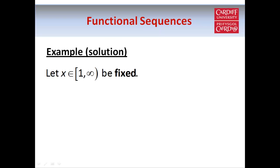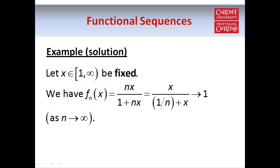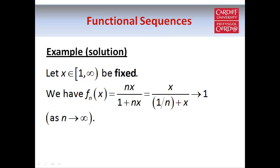To check for pointwise convergence, we consider a fixed value of x. If x is a fixed number between 1 and infinity, it's straightforward to show that fn(x) tends to 1 as n tends to infinity. So the sequence is pointwise convergent to the constant function f(x) = 1.